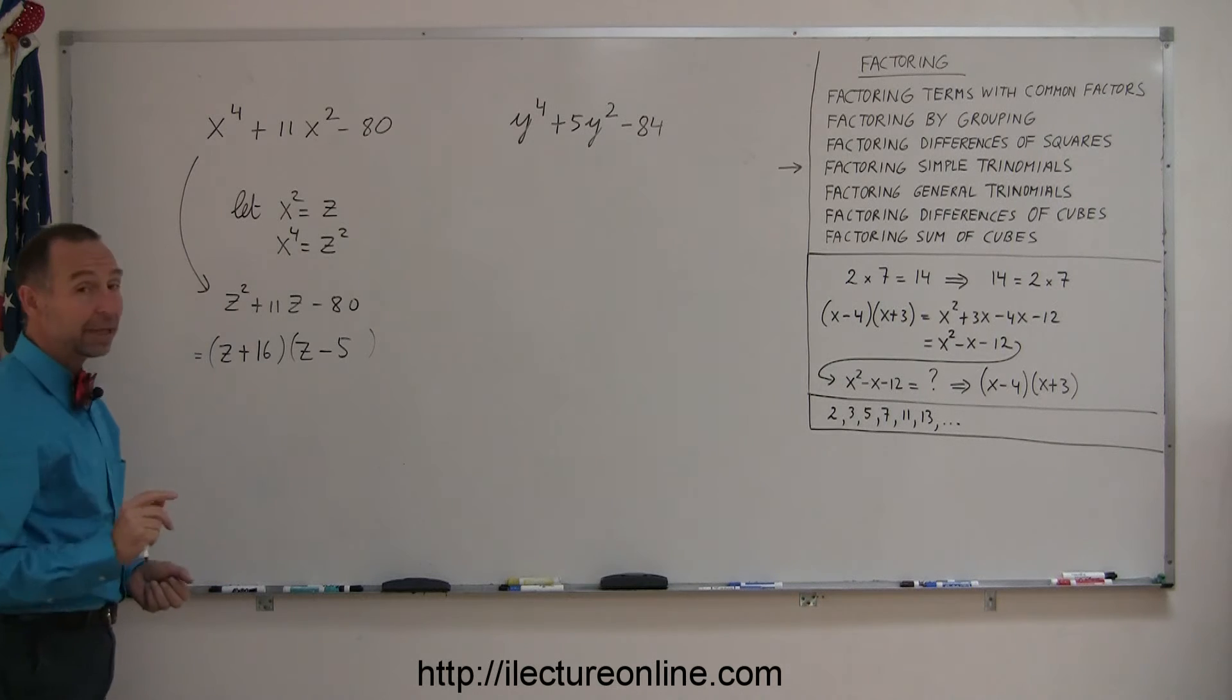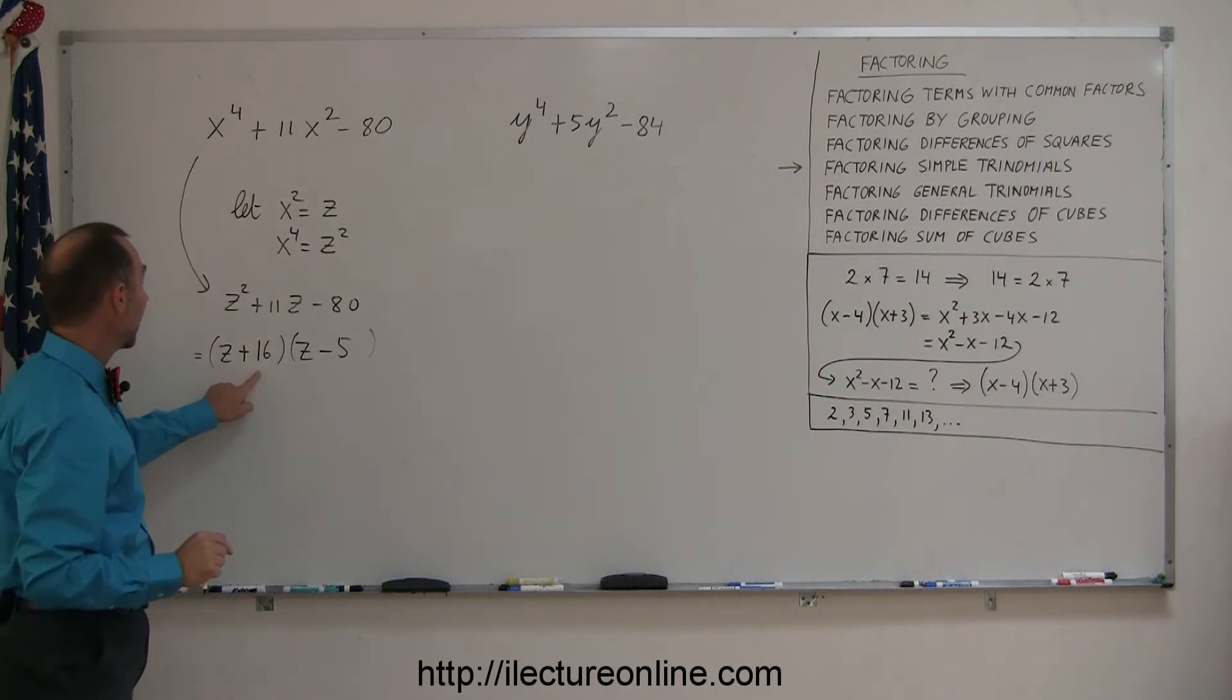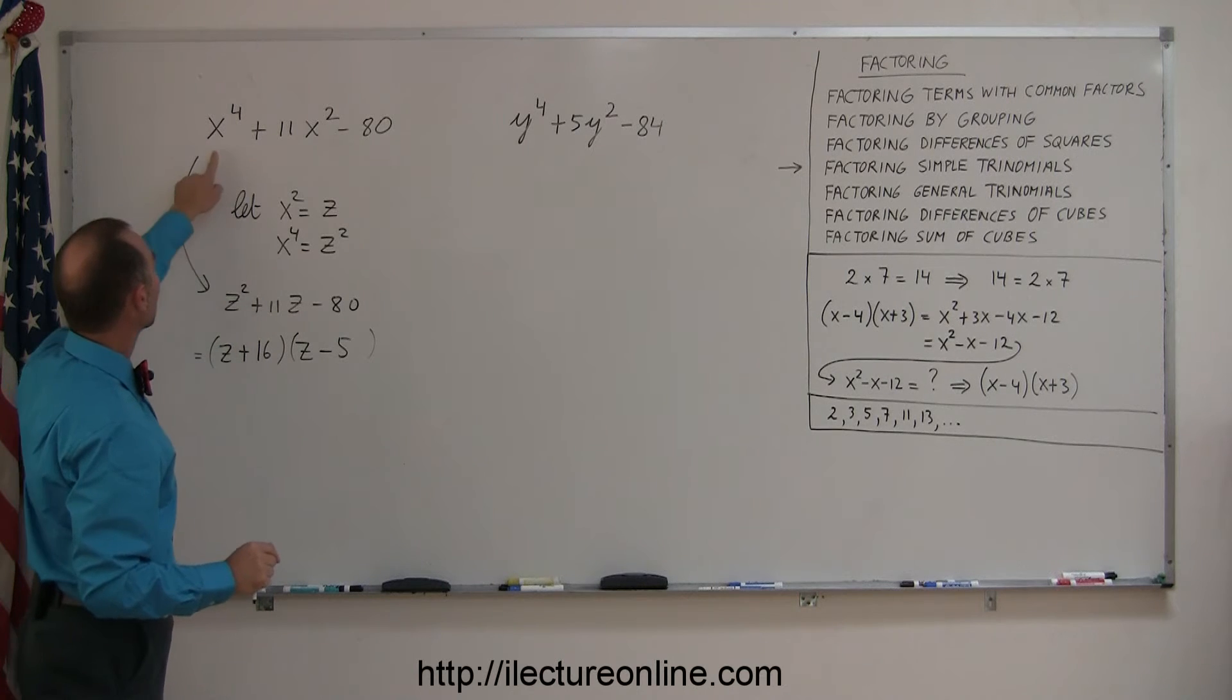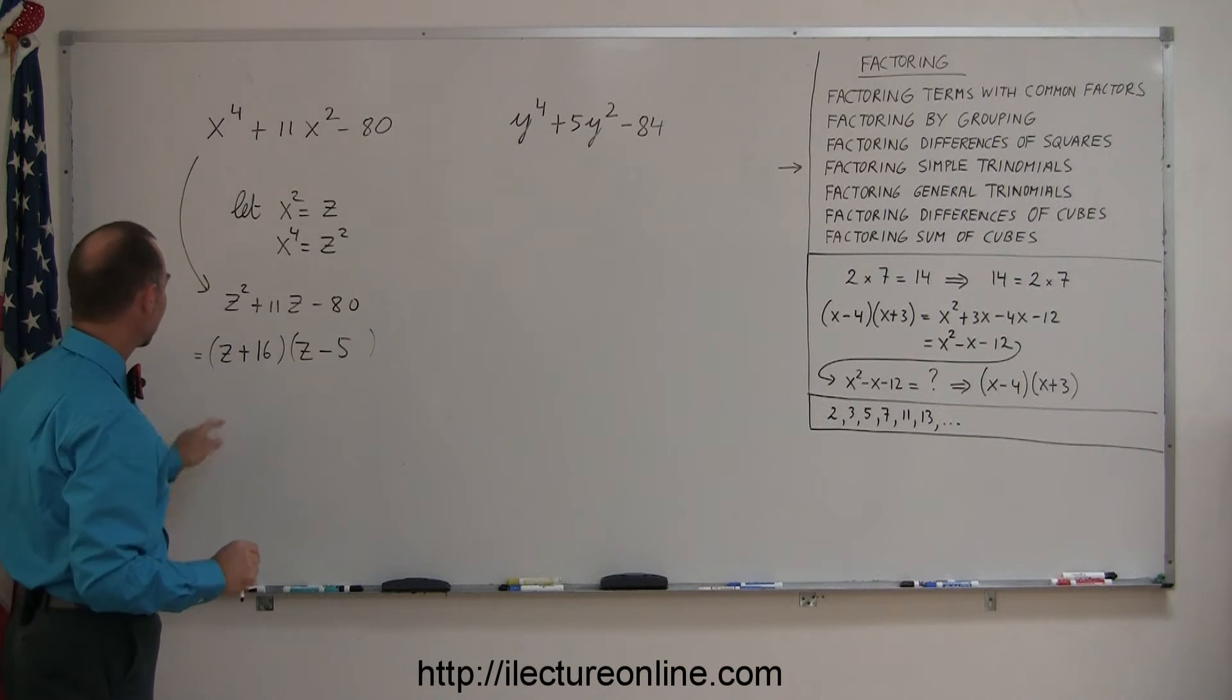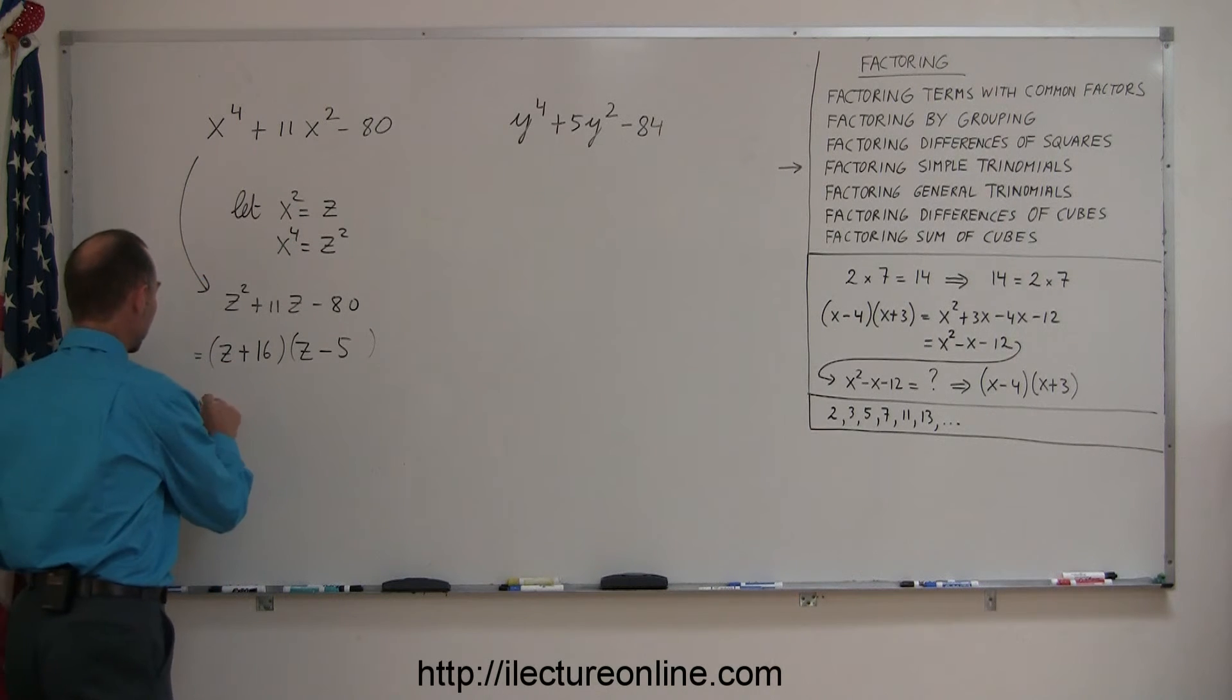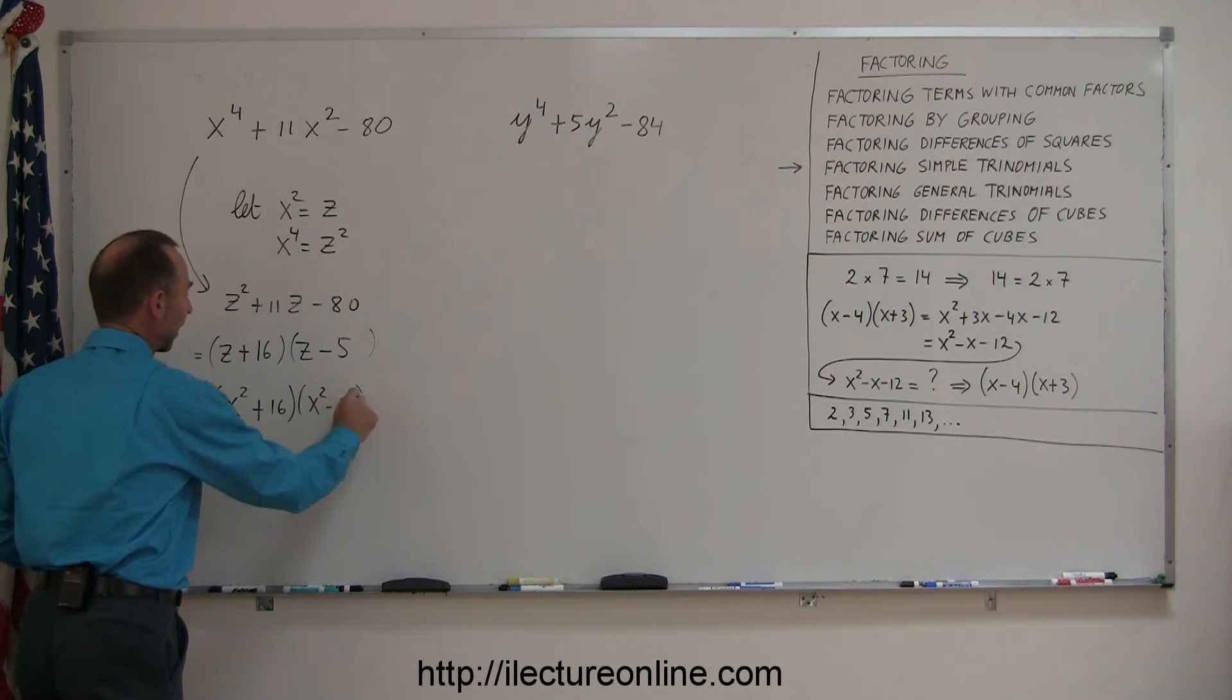But now we're not done yet, because we had a substitution here, we substituted variables. Now we want to plug back in the original variables. Since z was equal to x squared, we'll substitute back in for that z. So we have x squared plus 16, and x squared minus 5.